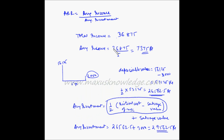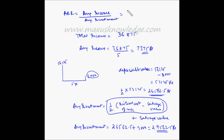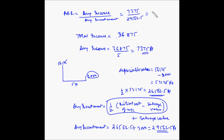So we have the average income and the average investment. ARR becomes 7,375 divided by 29,562.5, which is equal to 0.24947 or approximately 24.947%.